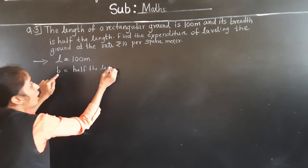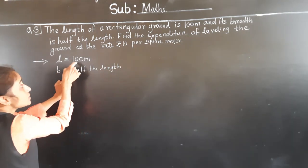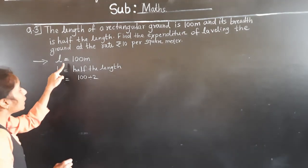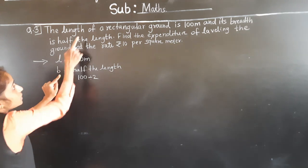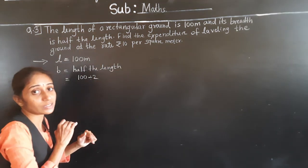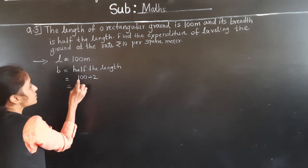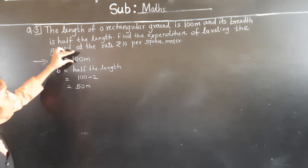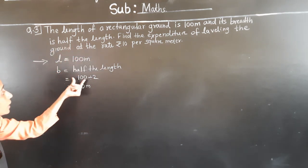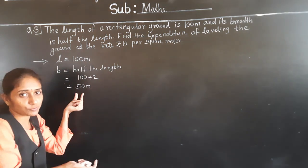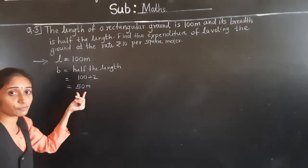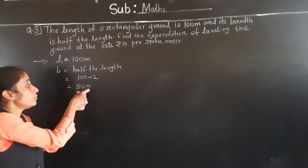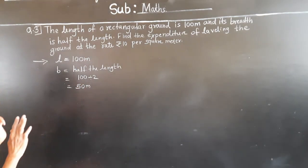Breadth is half the length. Length is 100 meters. Half means divide by 2, so breadth = 100 ÷ 2 = 50 meters. So length is 100 meters and breadth is 50 meters. Now we have length and breadth.